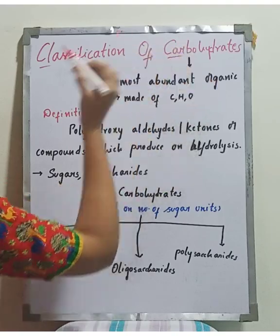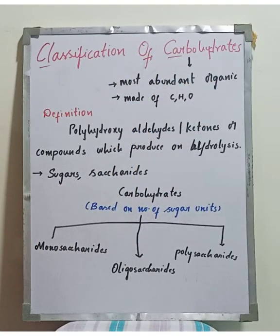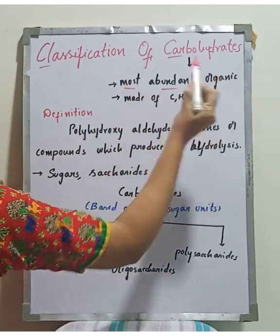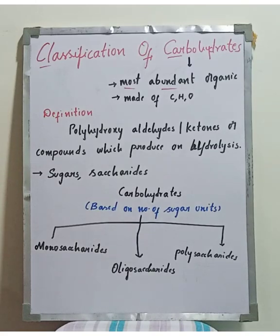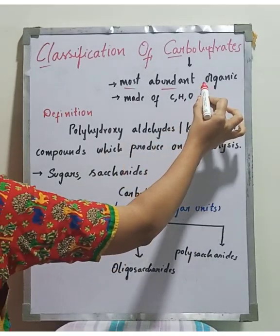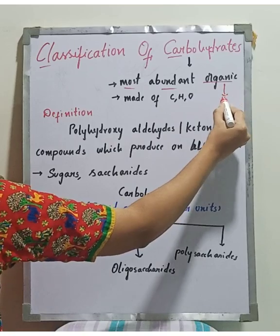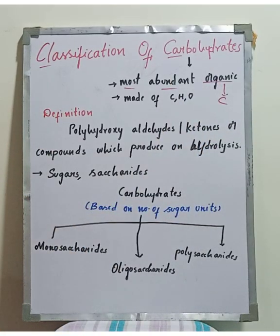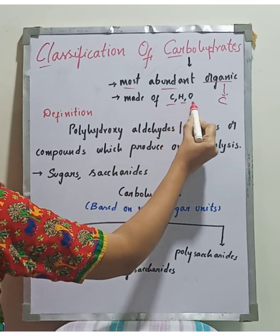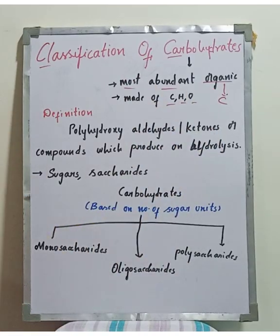Carbohydrates are the most abundant organic molecules in nature. Organic molecules are carbon-containing molecules. Carbohydrates are made up of carbon, hydrogen, and oxygen.